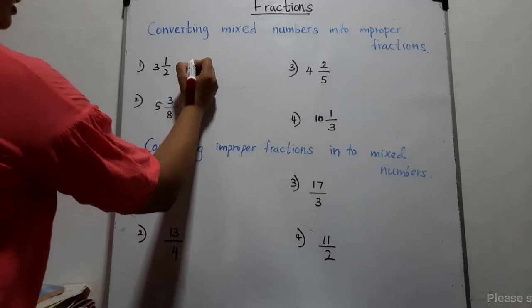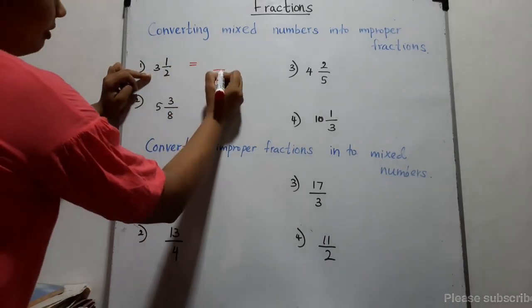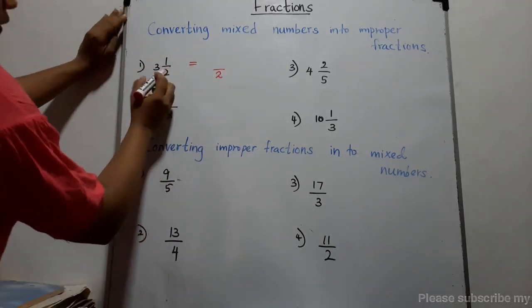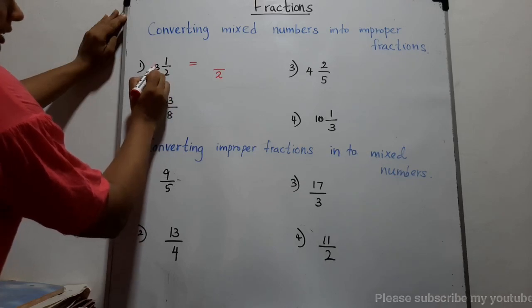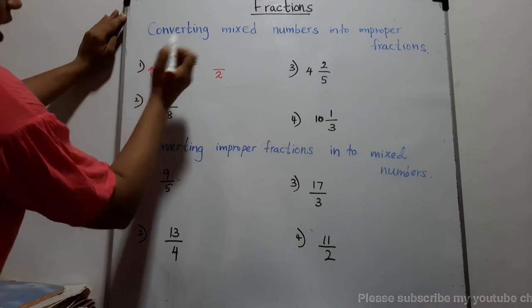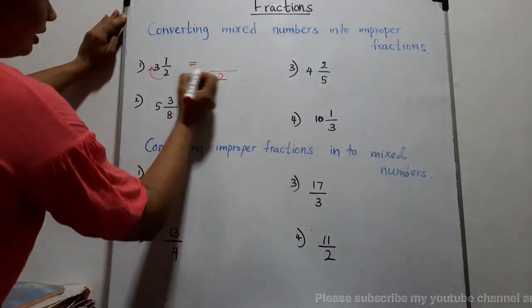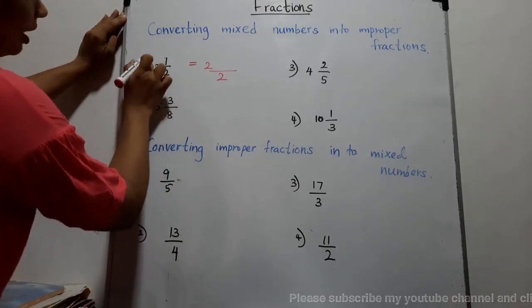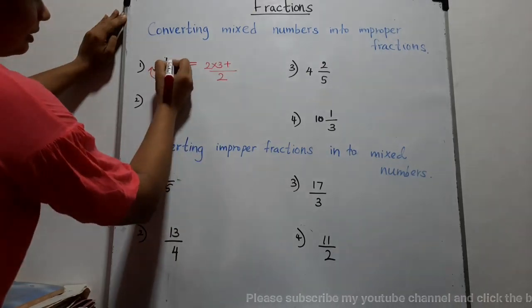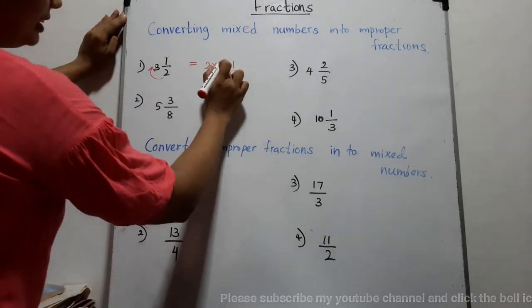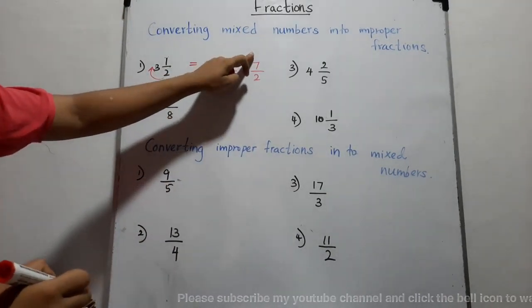It's not difficult. For three and a half — the denominator is two — we multiply the denominator by the whole number: two into three is six. Then add the numerator: six add one equals seven. The answer is seven halves.